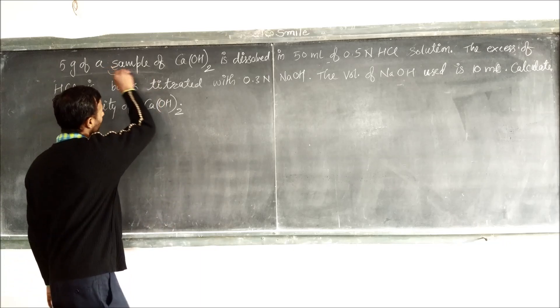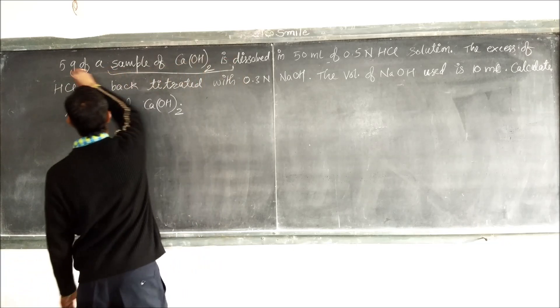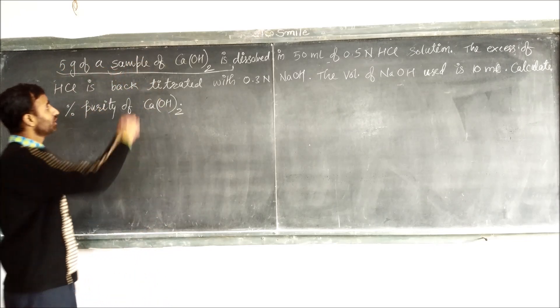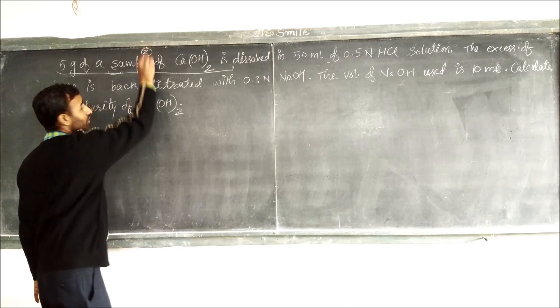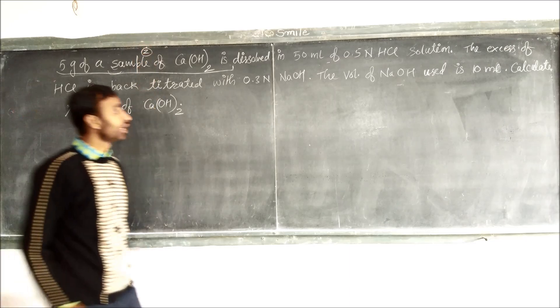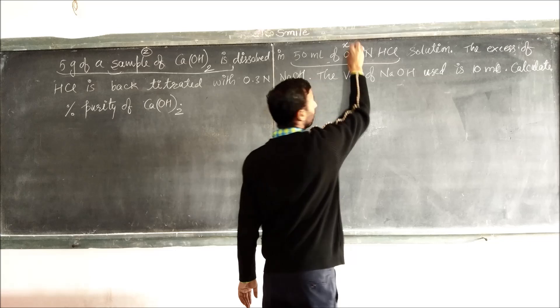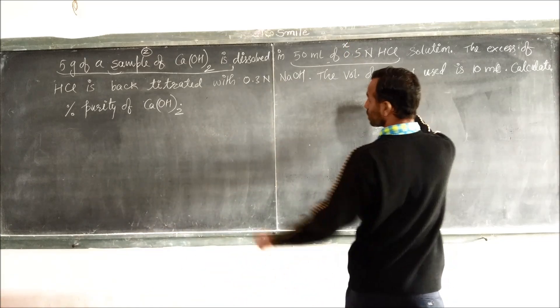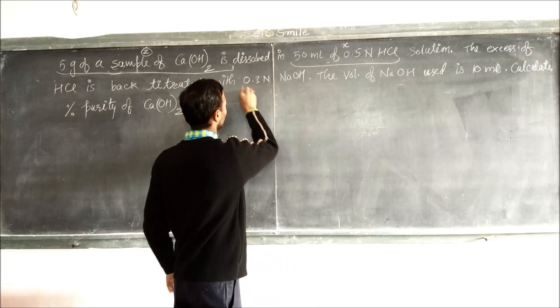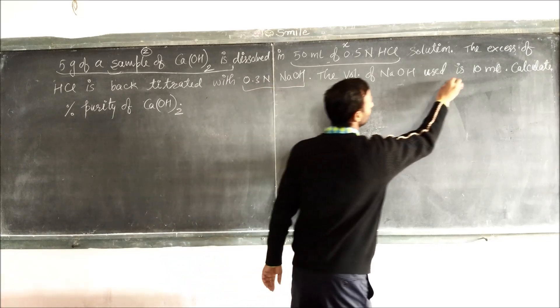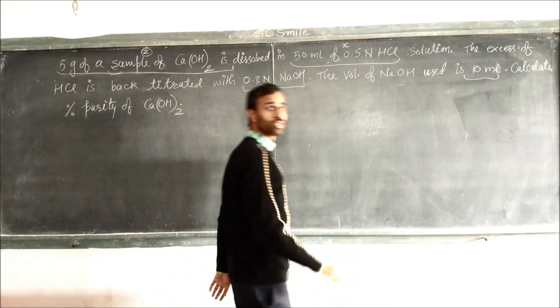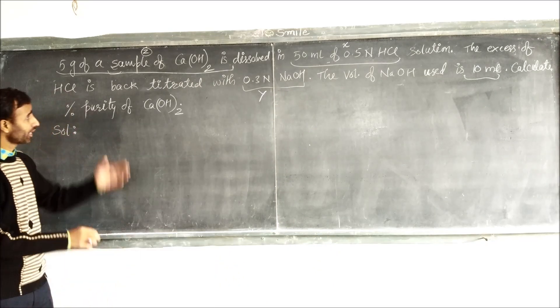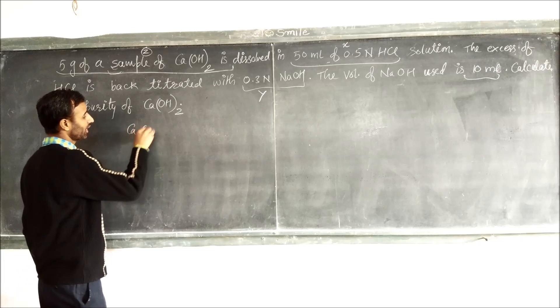The volume of NaOH used is 10 ml. So what is the percentage purity of calcium hydroxide? That means this is calcium hydroxide, that means this is Z. And this one is X (HCl). And NaOH 0.3 normal with volume 10 ml, this is Y.